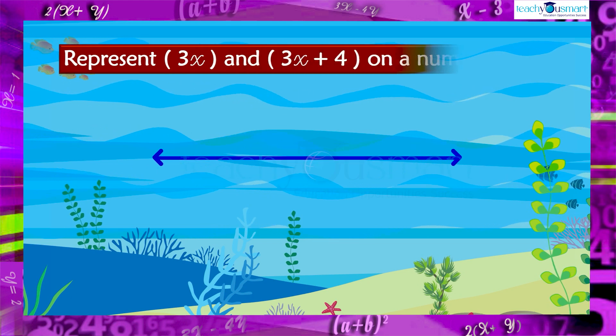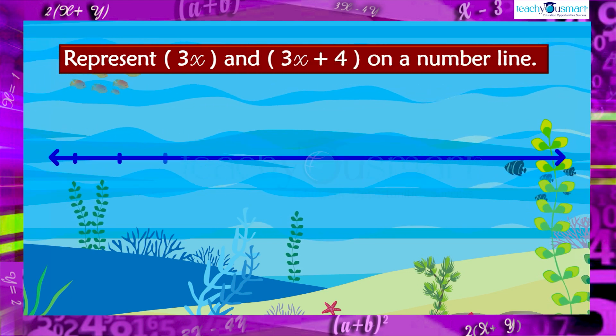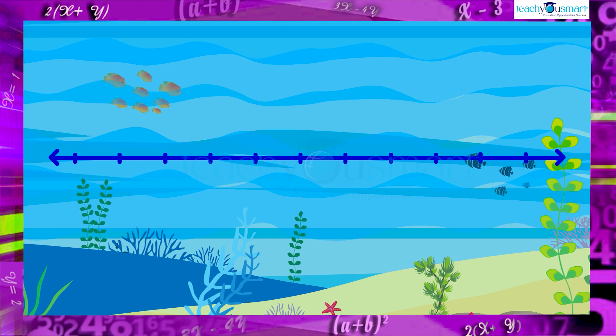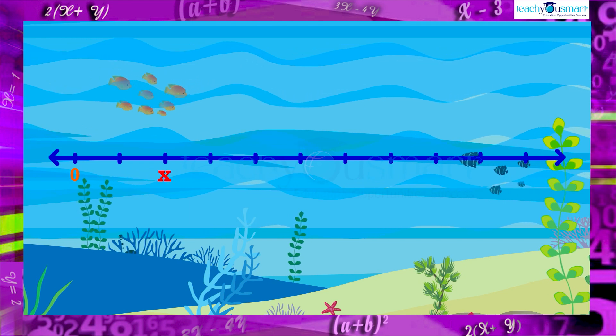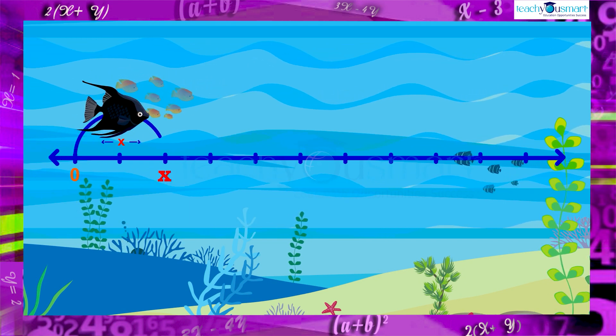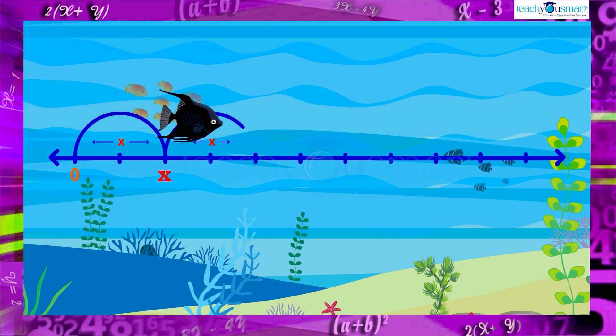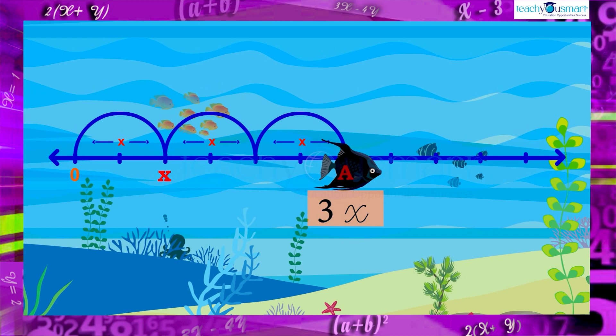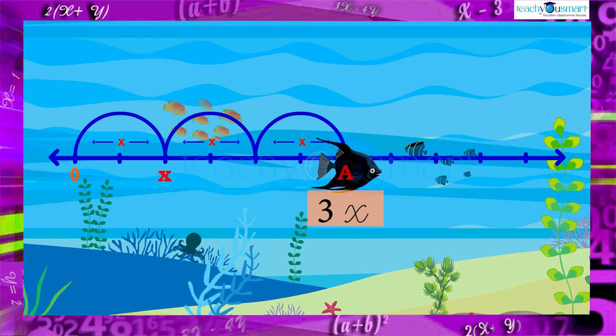Now look at the expressions 3x and 3x plus four. In the case of 3x, first mark the position of x. Then, the position of 3x will be three times the distance of x from the origin. Mark it as a. This distance would be 3x.